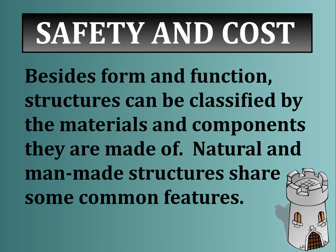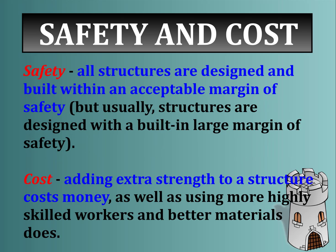Besides form and function, structures can be classified by the materials and components they are made out of. Some natural and man-made structures share very common features. Key considerations when building a structure include safety and cost. All structures are designed within an acceptable margin of safety, but builders usually add a large safety margin to overcompensate and prevent structural failures. However, adding extra strength costs money, as does using more highly skilled workers and better materials.